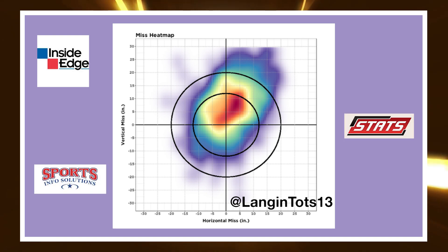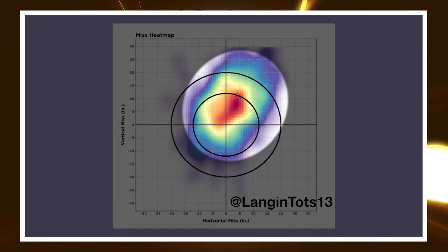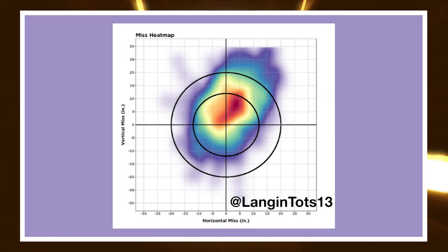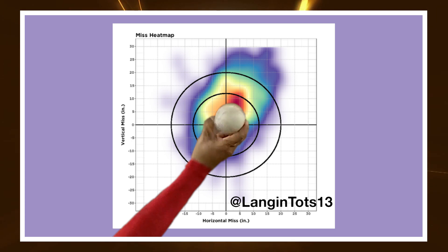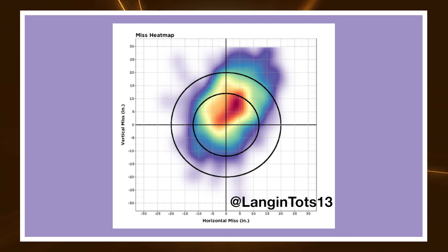This intended zone is something that's tracked manually by a company like Inside Edge, Stats LLC, or even Sports Info Solutions. The heat map surrounding that origin point is the concentration of where the result of the pitch actually ended up relative to the intended zone. If we assume that this is a right-handed pitcher, the plot communicates that regardless of where the pitcher intended to throw the ball, he tends to miss up and away from his target. We could even find a league average miss for a specific pitch, specific handedness, and specific location.